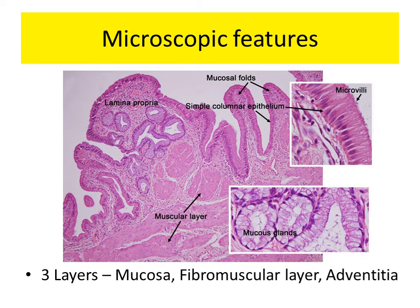Coming to the histology of the gallbladder, it is made up of the following layers: mucosa, fibromuscular layer, and adventitia or the serosa.